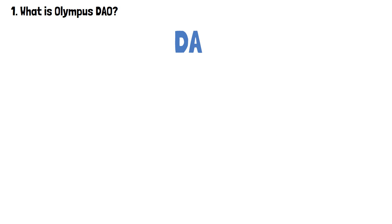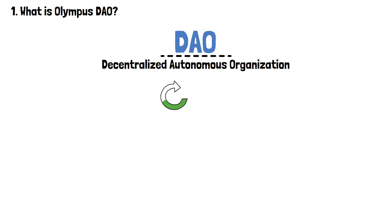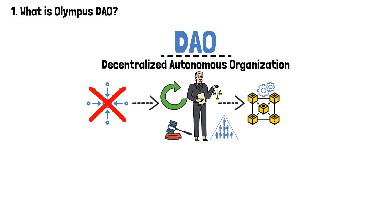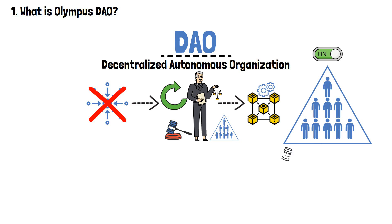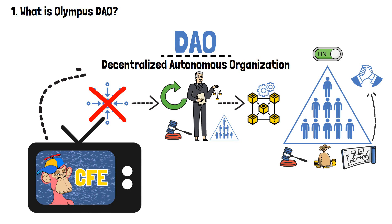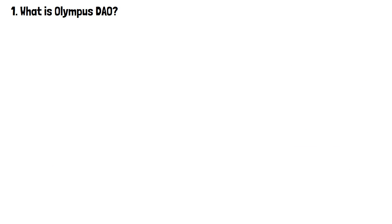First of all, DAO. A DAO, or Decentralized Autonomous Organization, represents a self-governing entity powered by blockchain technology, where decision-making processes and governance structures are decentralized and operate without a central authority. DAOs enable participants to collectively make decisions, manage resources, and shape the direction of the organization through a consensus-driven approach. I've got an entire video about DAOs — be sure to check it out!